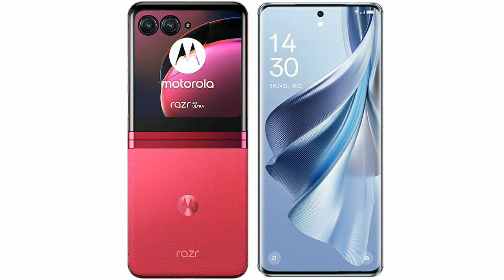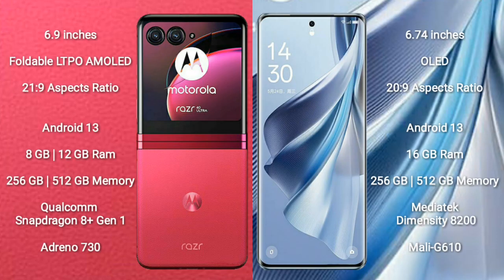I will compare the new Motorola Razr 40 Ultra with the OPPO Reno 10 Pro. The Motorola Razr 40 Ultra comes with a 6.9-inch foldable LTPO AMOLED display with an aspect ratio of 21.9, while the OPPO Reno 10 Pro Plus comes with a 6.74-inch OLED display with an aspect ratio of 22.9.